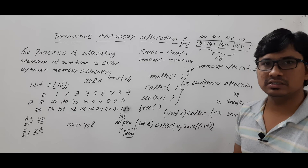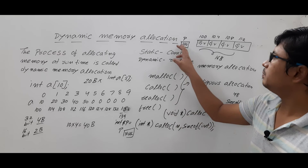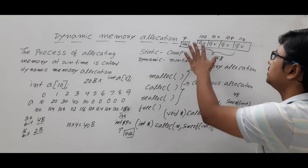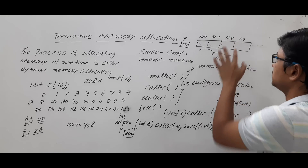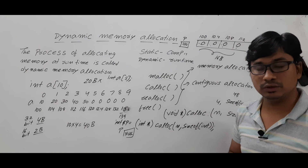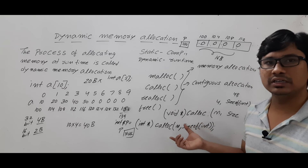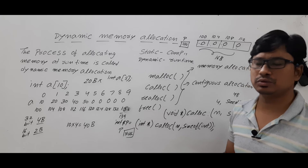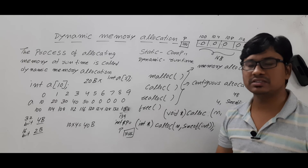When memory is successfully created with calloc, the base address is stored in pointer p. The key difference from malloc is that calloc initializes the allocated memory to zeros by default, whereas malloc leaves garbage values. If memory allocation fails, calloc also returns null to pointer p, same as malloc.